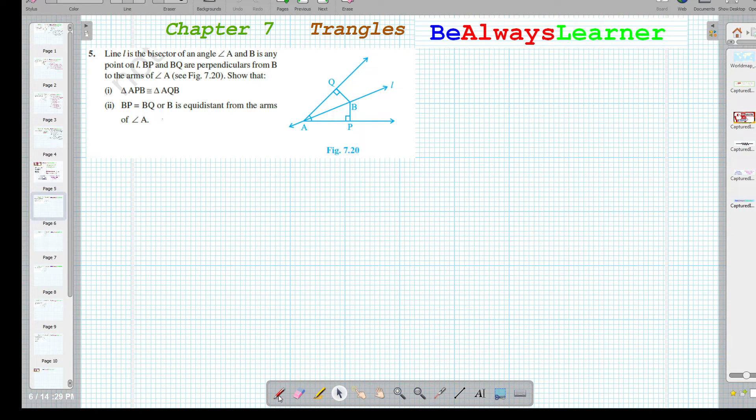Question number 5. Here it is given that line L is the bisector of angle A and B is any point on L.